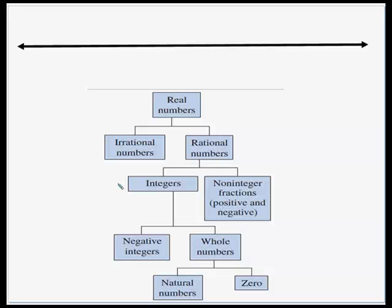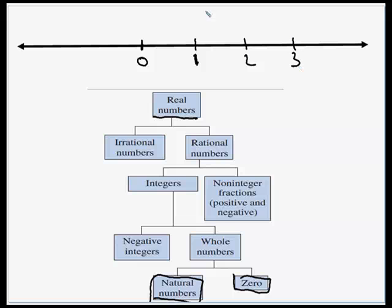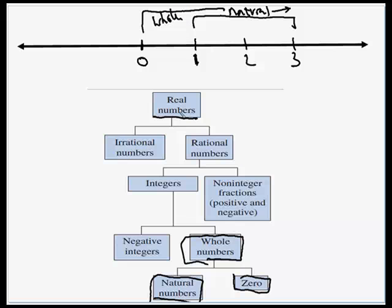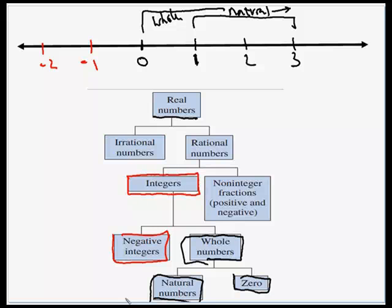Here's our number line — let's start filling this in from the bottom up. On the very top we see the entire real number line. Starting at the bottom, we have zero on the number line, and then the natural numbers, which are the positive whole numbers. Natural numbers plus zero are the whole numbers. Next we look at the negative integers — everything to the left: negative one, negative two, and so on. If we combine the negative integers and the whole numbers, those are the group of integers, and again those are just whole numbers.